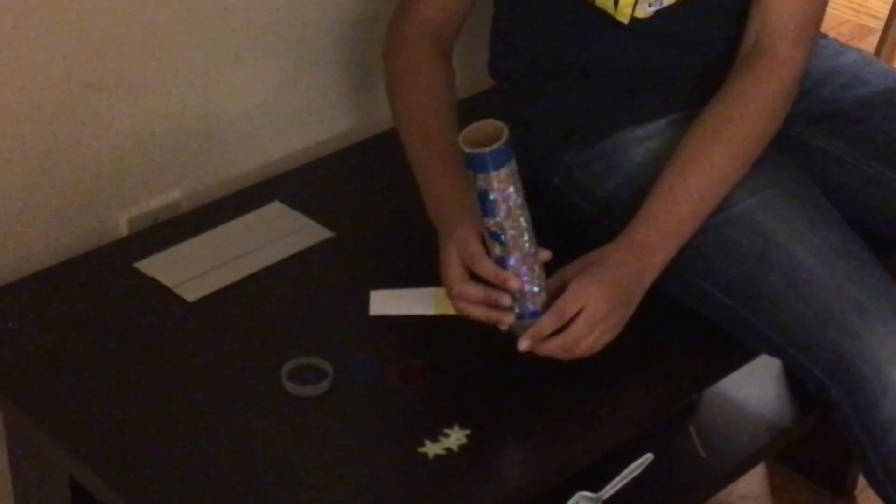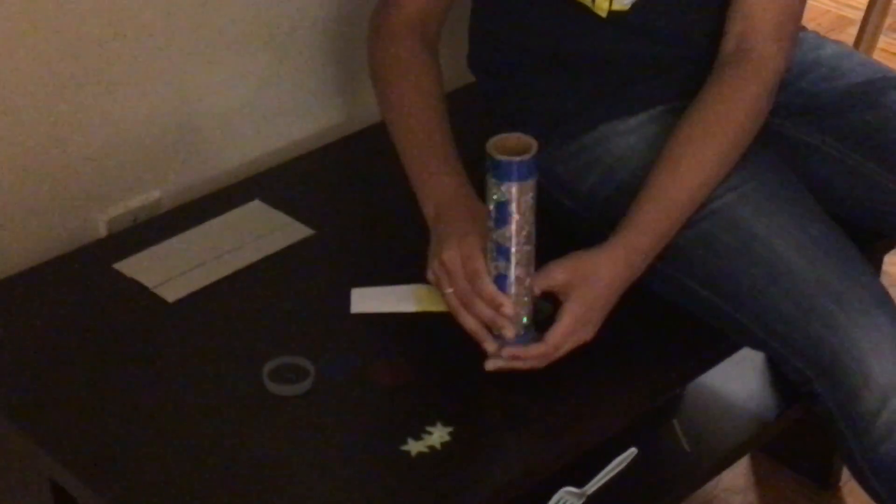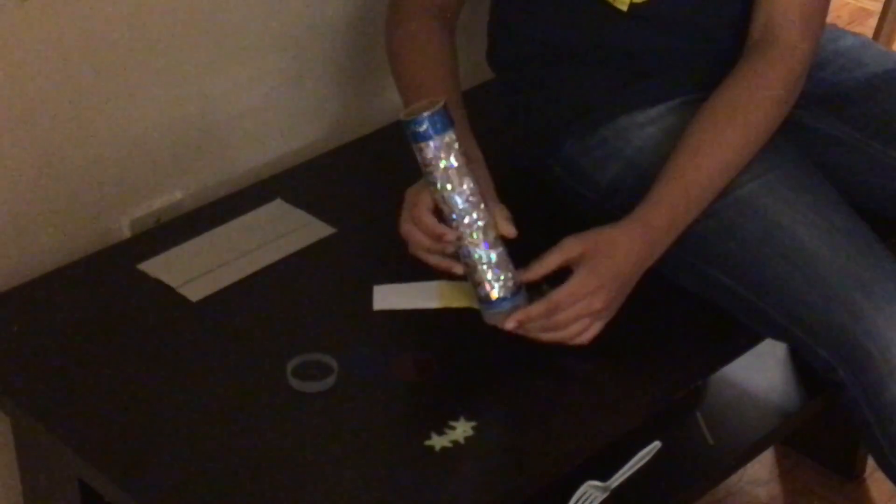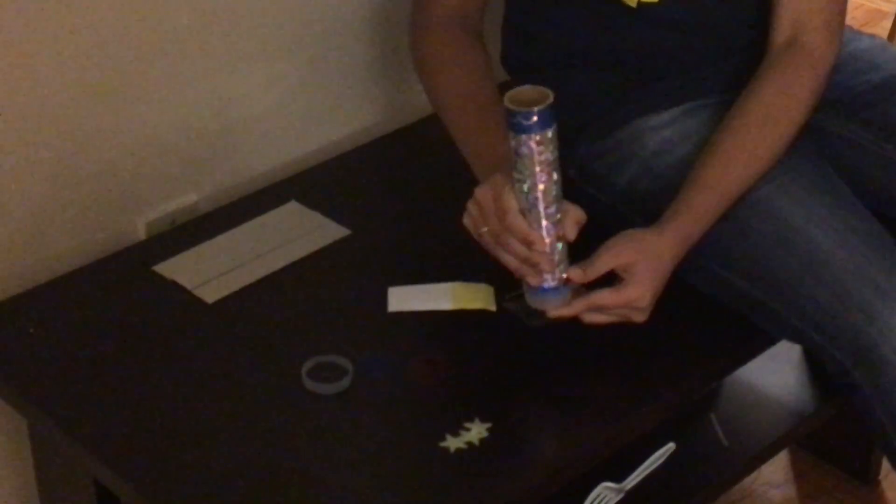Now, take your kaleidoscope tube and gently press them together. Make sure that your bead chamber is secure. We're looking pretty good now.